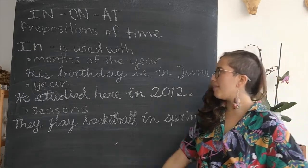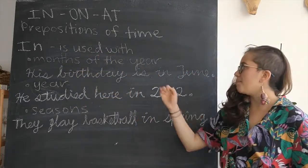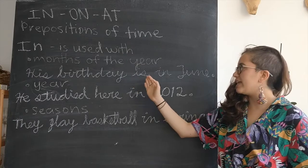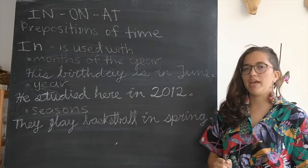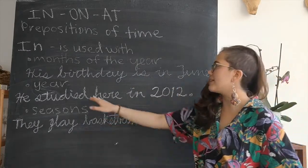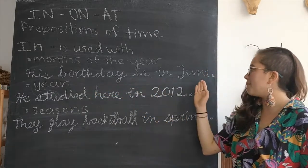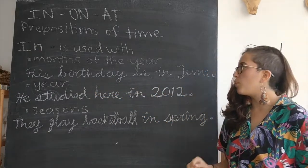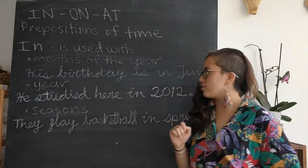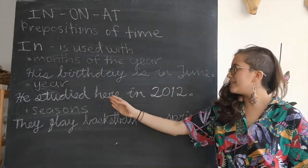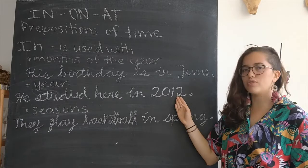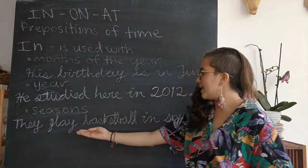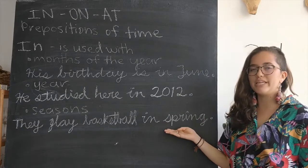So for example, in is used with months of the year. We would say his birthday is in June. Here we are describing that his birthday will happen at this time, in June. We also use in with years, so we would say he studied here in 2012. With seasons, we would say they play basketball in spring.